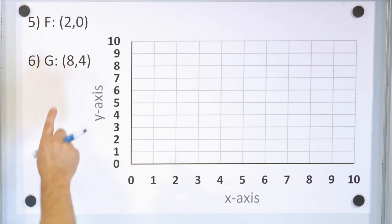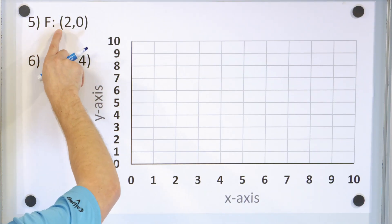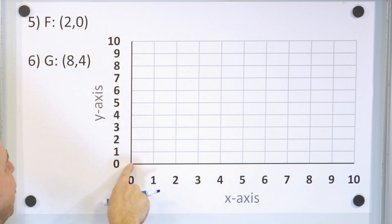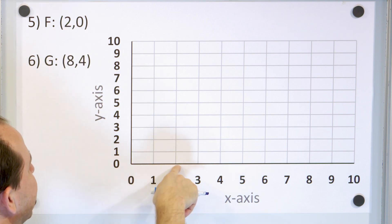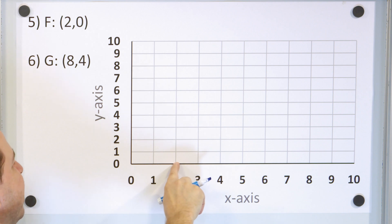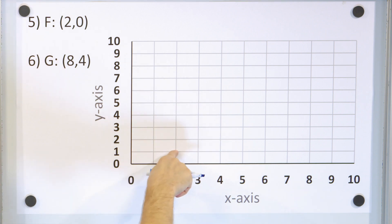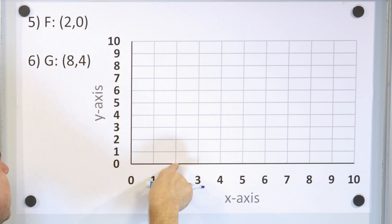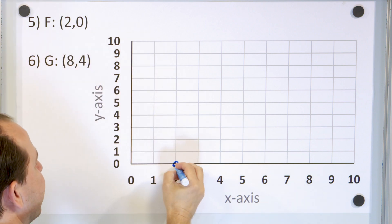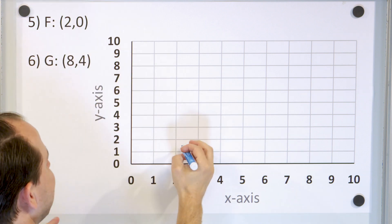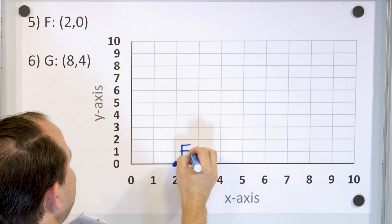Next we have point F at 2 comma 0. So we have to go to x equals 2, which is right here. And then y is 0, which means we don't go up at all — here would be y equals 1, so we have to stay on y equals 0. So 2 for x and 0 for y means the point is here, and the label is point F.